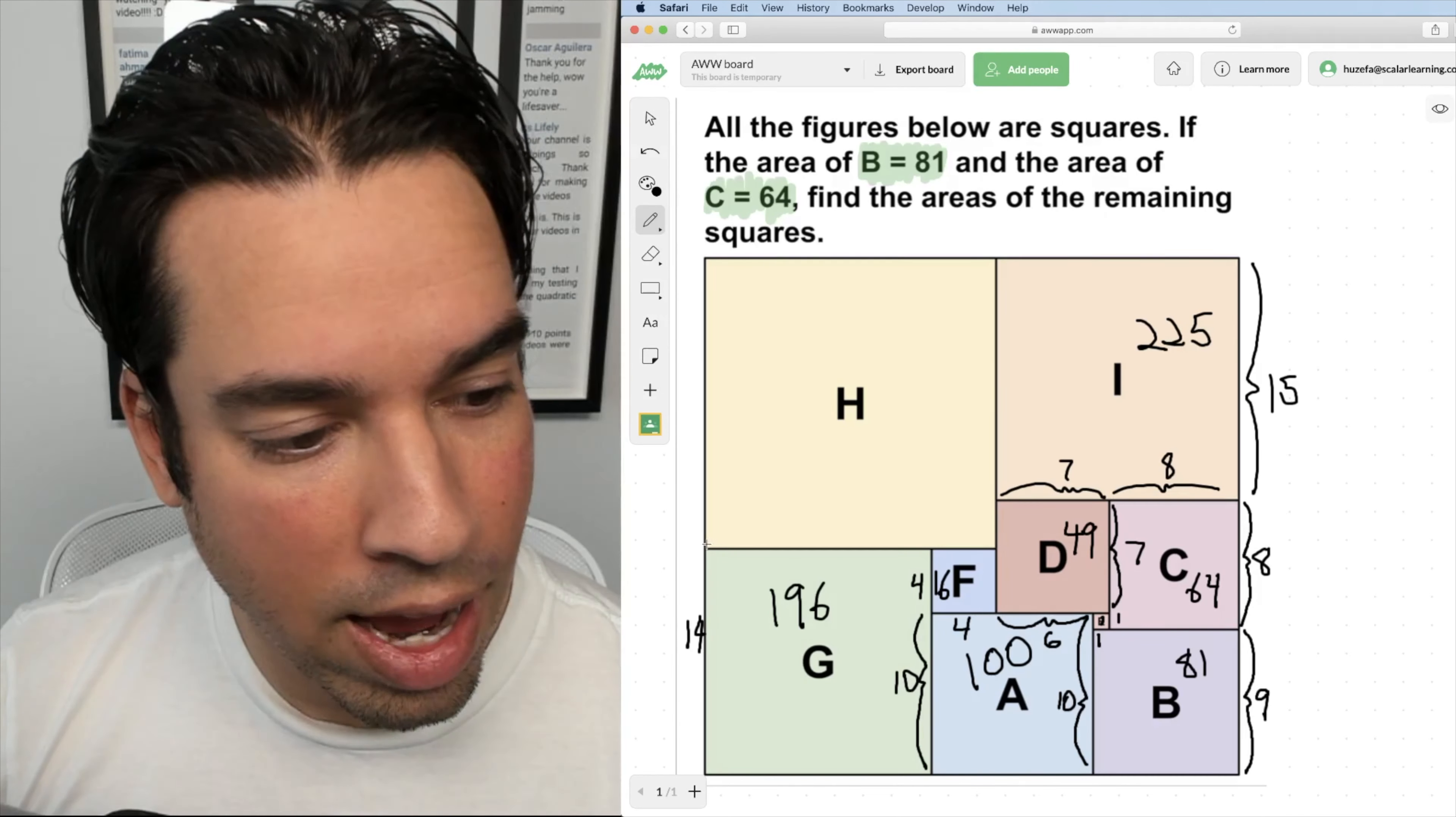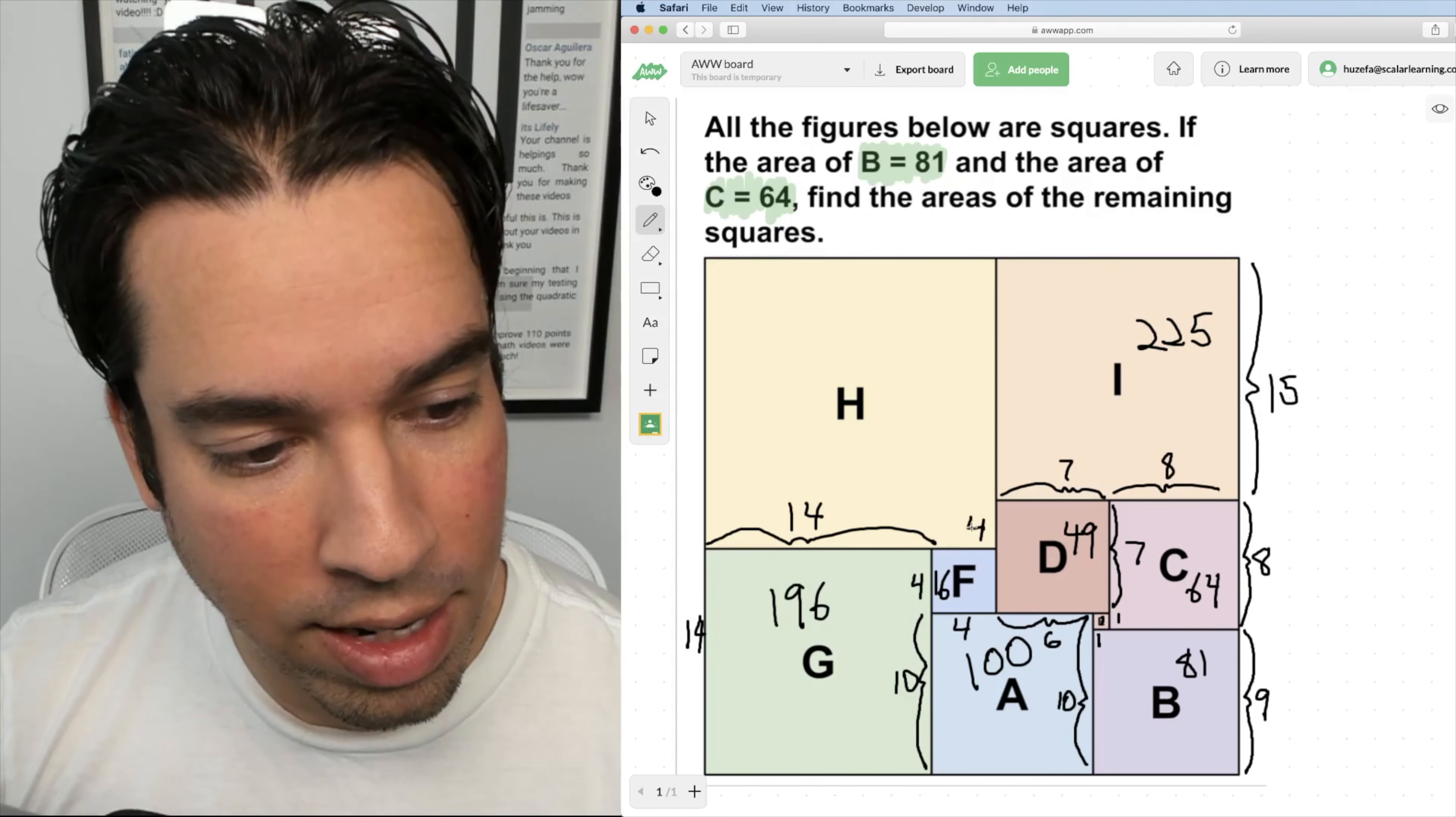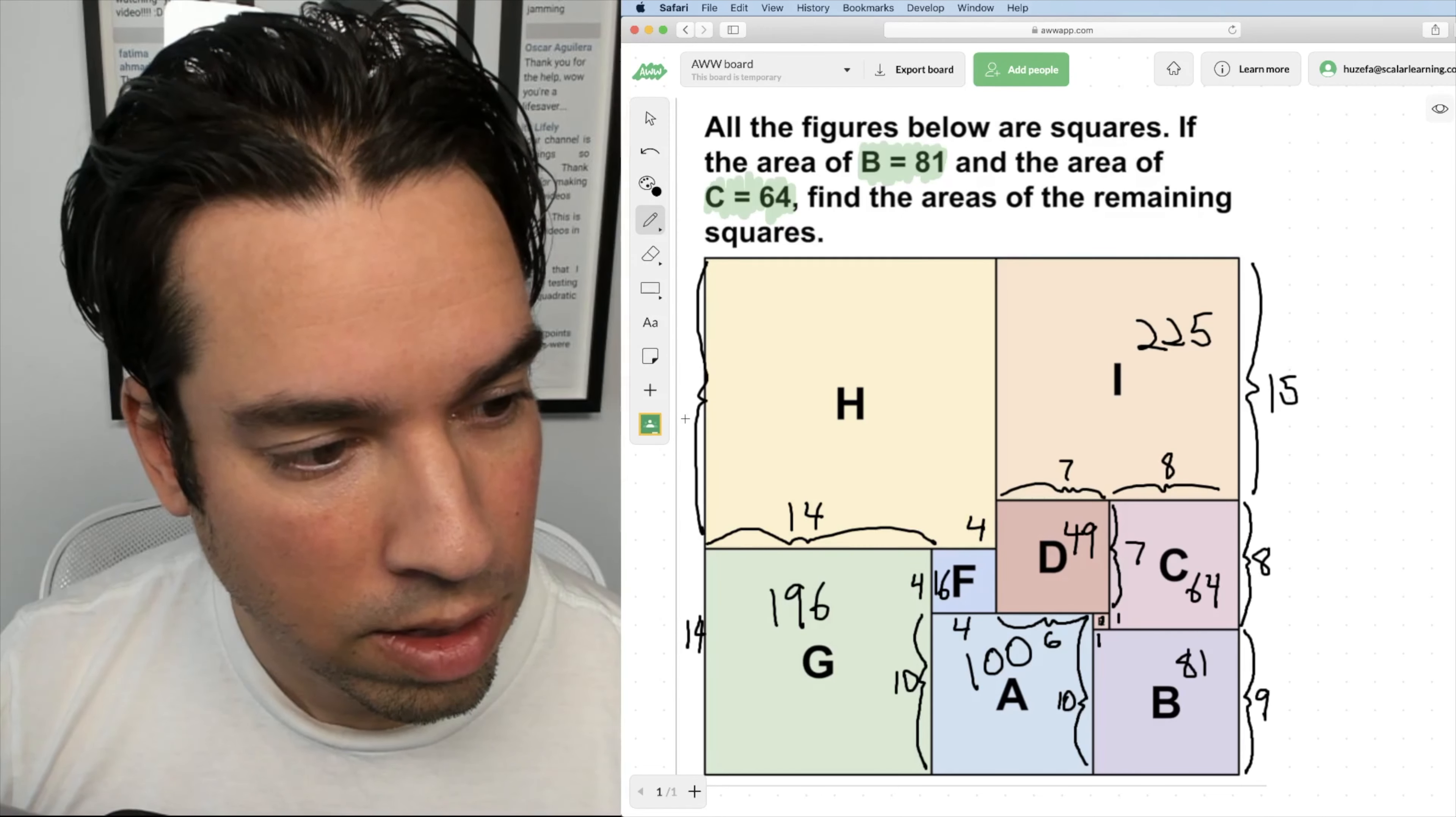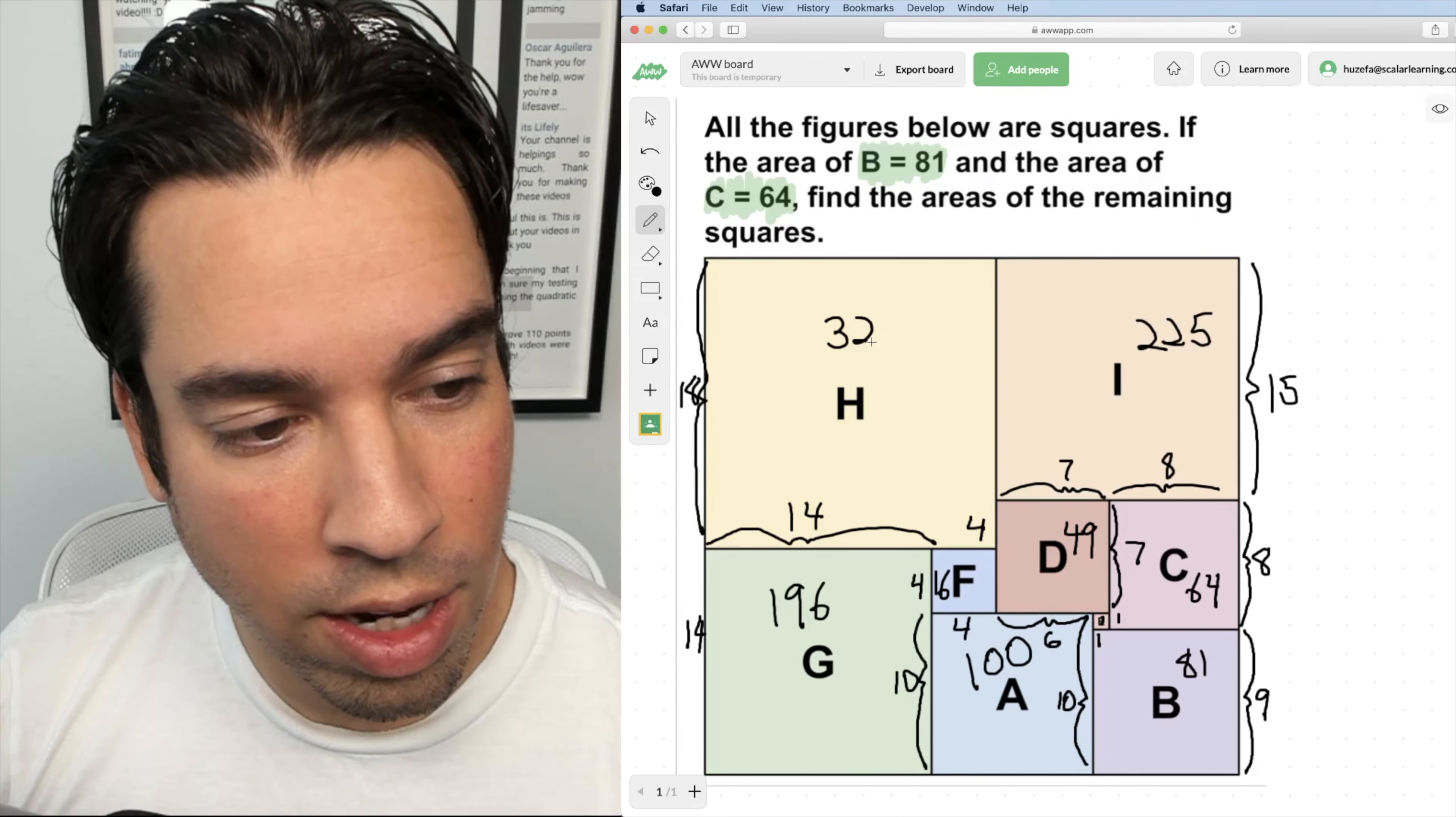Last but not least, I know that H can come from this side length, which is 14, and this side length, which is four added together, which means it has a length of 18. Meaning that H has an area of 18 squared, which is 324.